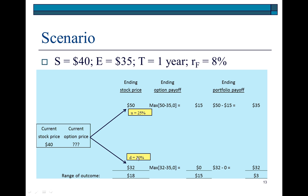If the stock ends up at $50, the option will be in the money with an intrinsic value of 50 minus 35, which is 15. This is the profit that the call option holder would enjoy, not you. Remember, you are the hedger. Put yourself in the position of a hedger who purchases a stock and is worried about the stock going down in value, and to hedge, you wrote a call.